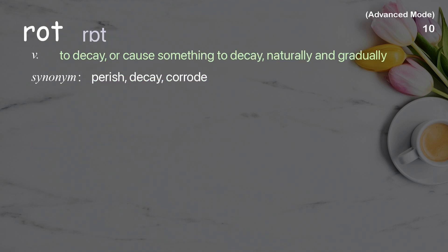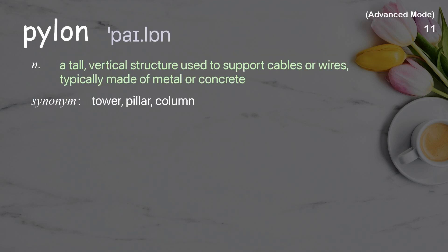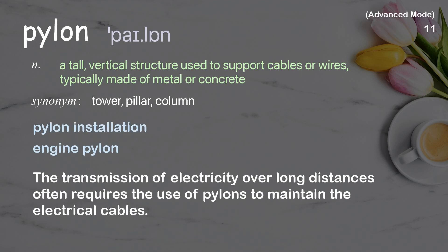Rot: to decay or cause something to decay naturally and gradually. Examples: begin to rot, rot with age. Please refrigerate the meat or it will rot. Pylon: a tall vertical structure used to support cables or wires, typically made of metal or concrete. Examples: pylon installation, engine pylon. The transmission of electricity over long distances often requires the use of pylons to maintain the electrical cables.